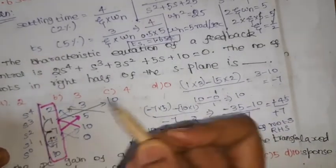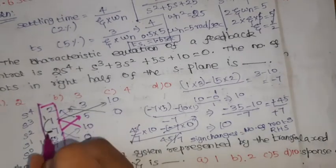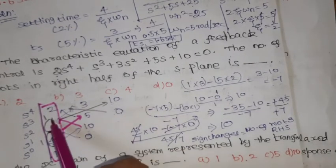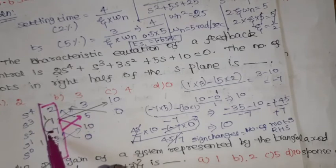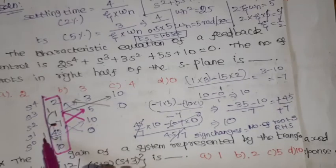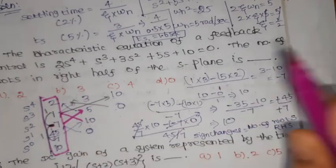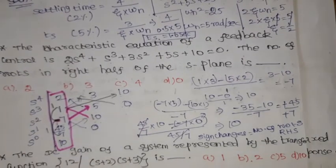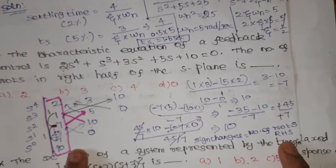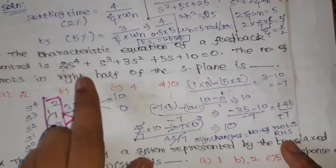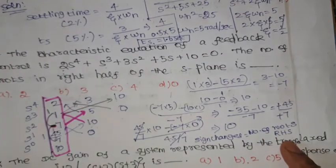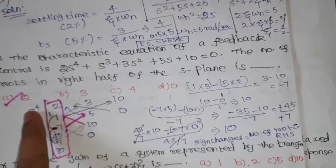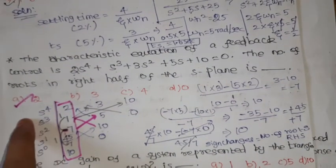So we have two sign changes total in the first column. Two sign changes means two roots lie in the right half of the s-plane. The total number of roots in the characteristic equation is four. Therefore, two of those four roots are in the right half of the s-plane, making option A (2) the correct answer for this problem.